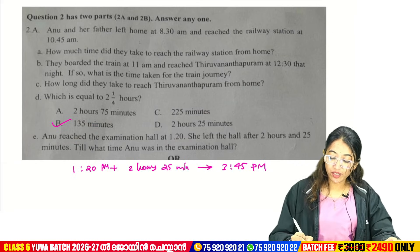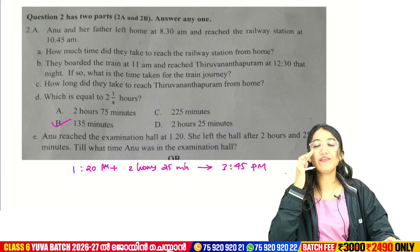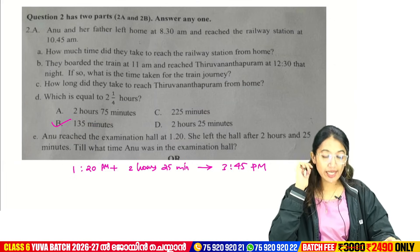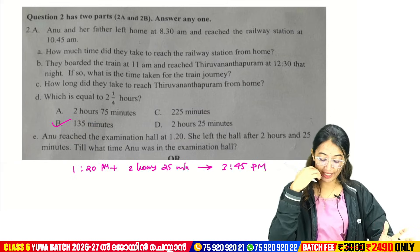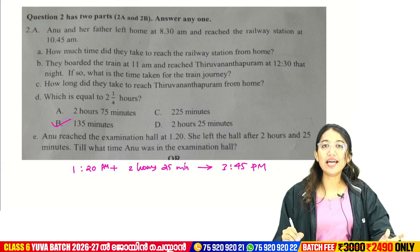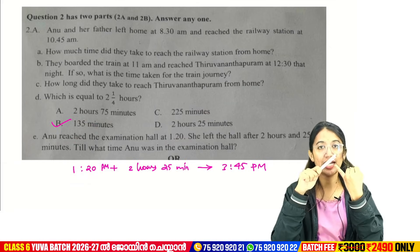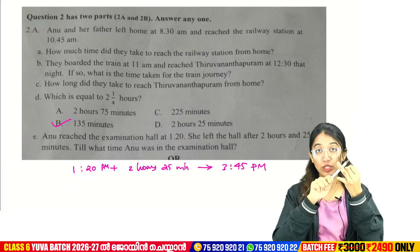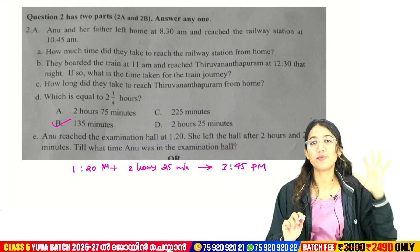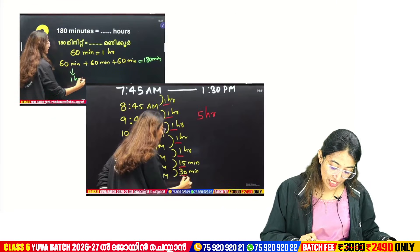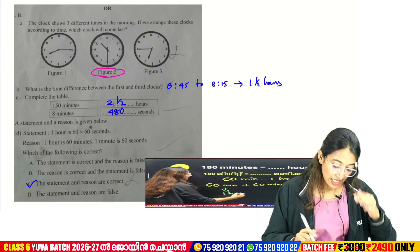She left the exam hall after 2 hours and 25 minutes. We have to find when she came into the exam hall. Thinking: 1:20, 2:20 minutes, 1:20 minutes, 2:20 minutes, 3 — we take 3 hours 25 minutes at the exam hall. Let's take a clear answer.